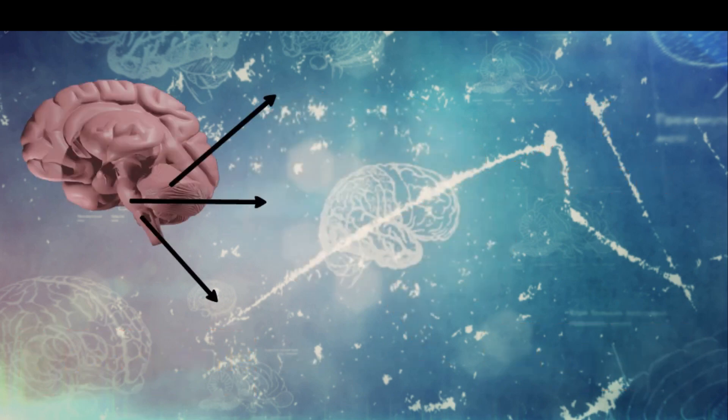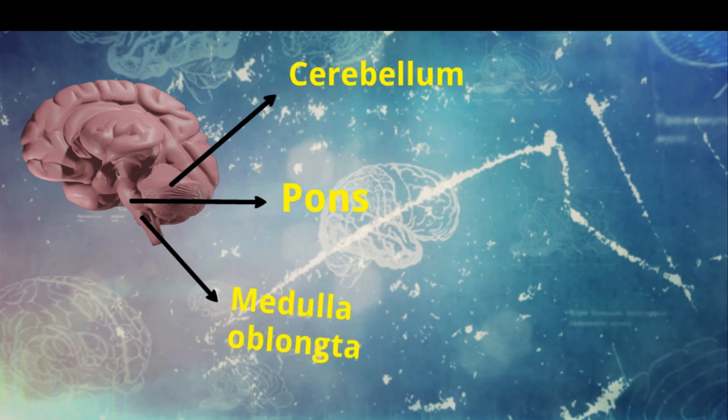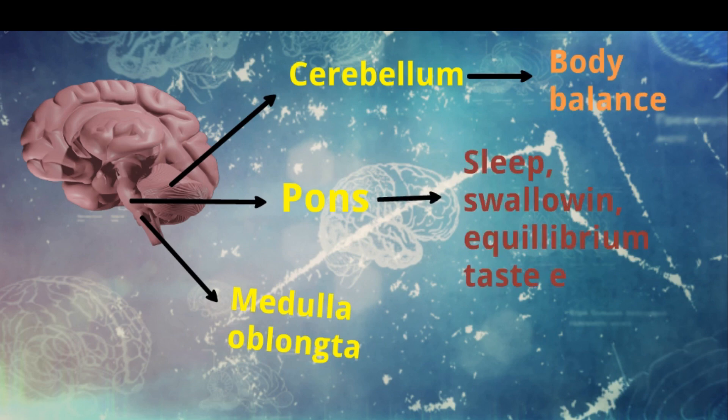The hindbrain consists of three parts: cerebellum, pons, and medulla oblongata. The cerebellum is involved in maintaining body balance. The pons controls many functions like sleep, swallowing, equilibrium, and taste.